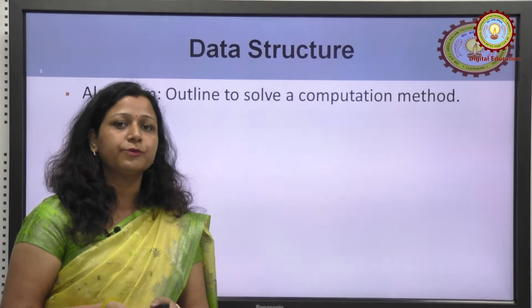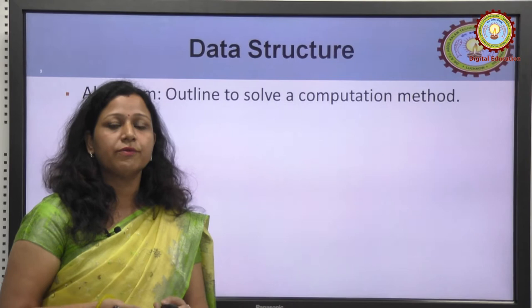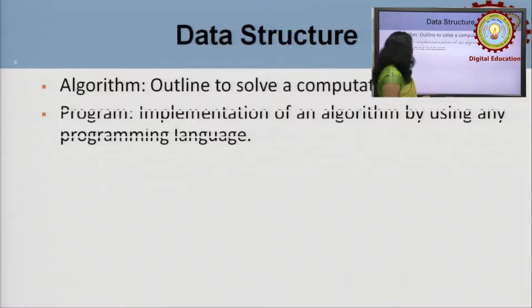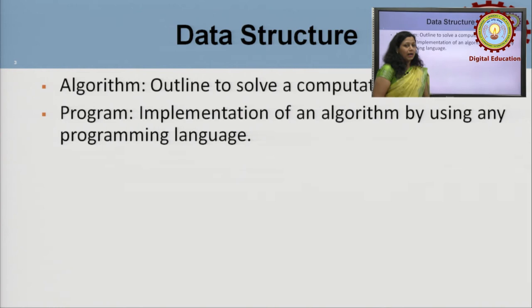The outline we draw to solve a complex problem is called an algorithm. An algorithm is done only for our logical clarity and understanding. But if we want to implement it on a computer, we require a programming language. We use a programming language to convert and implement that algorithm.